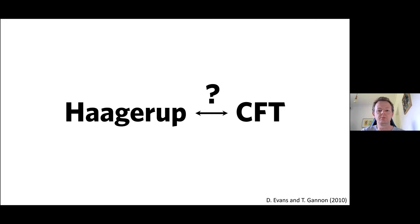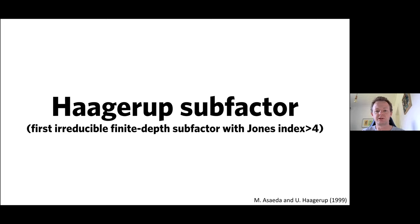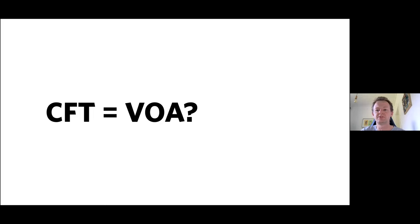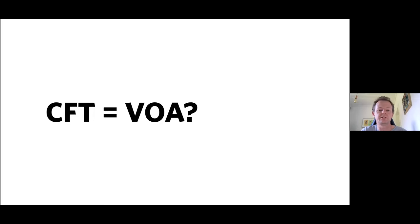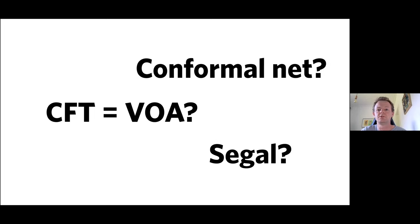The Haagerup subfactor is the first irreducible finite-depth subfactor with Jones index greater than four — you can find the details in the paper of Asaeda and Haagerup from 1999. On the other side of this correspondence we have CFTs. There are various ways to attack the problem of understanding what a CFT is: you could use a vertex operator algebra, the Segal formulation, or conformal nets. I'm going to do none of these things — I'll take a more concrete, down-to-earth approach.